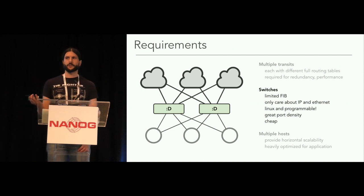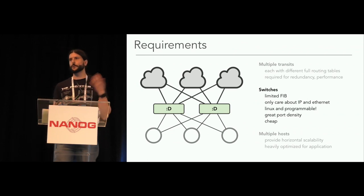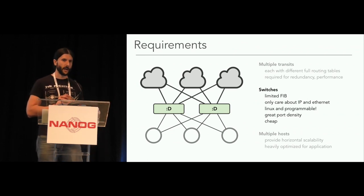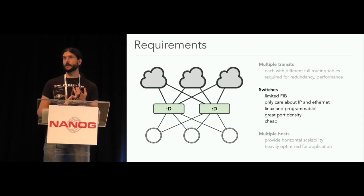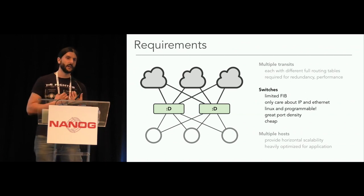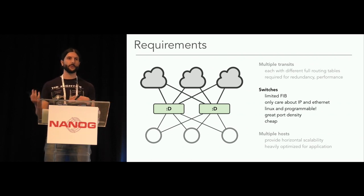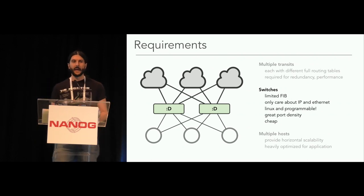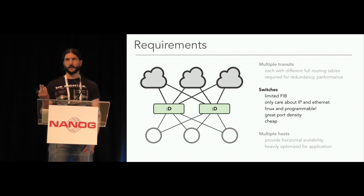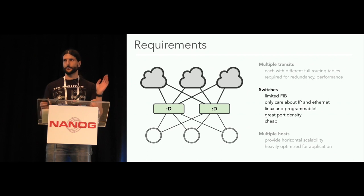On the other hand, you have switches. Switches are super cheap, the port density is great, they don't consume much power — which means you can have more servers in the rack. However, switches have limitations: you cannot feed all those routes from your transits into the FIB. And back in 2013, switches only cared about IP and Ethernet, which means overlays weren't an option.